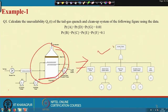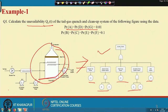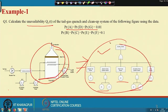Now we have to find the unavailability. The basic given probability is given here — the probability of A, the probability of D, all the things are given here. I will show the step-by-step procedure for how to calculate unavailability given this fault tree.